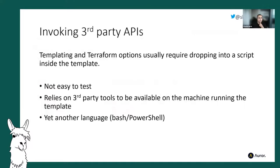When you need to call other APIs, if there's no built-in provider, you generally drop down into running some kind of script. The problem is it can be difficult to test that script without running the whole infrastructure template. Scripts generally rely on tools being available on the machine running them — they're not self-contained — and your team needs to maintain something in another language, like PowerShell, on top of everything else, and all of these things need to be kept up to date.